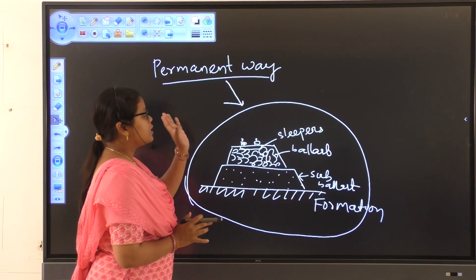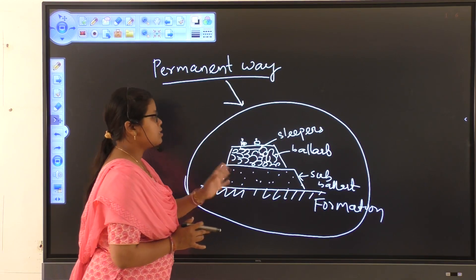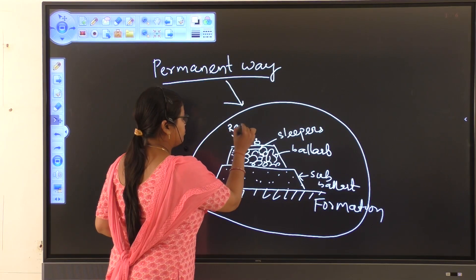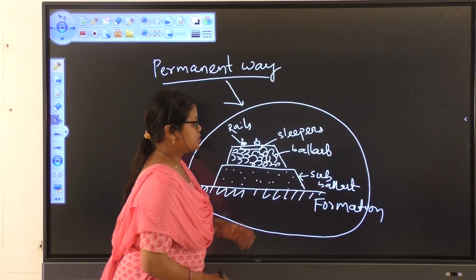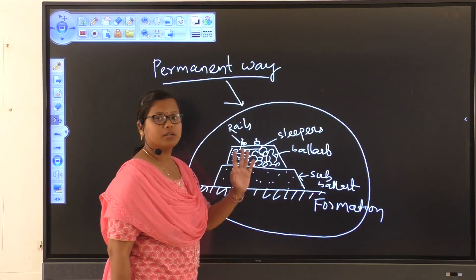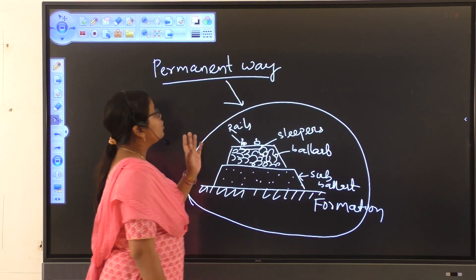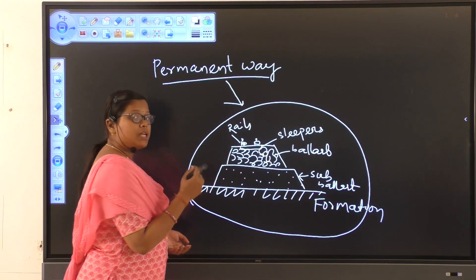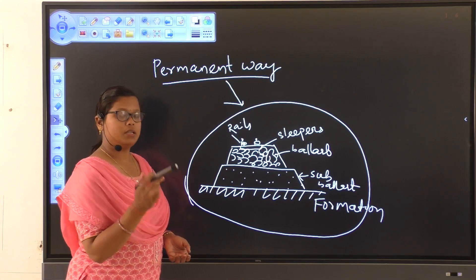So what is permanent way? Permanent way is the combination of sleepers, rails, ballast, sub-ballast and formation. So permanent way distinguishes the temporary track from permanent track.